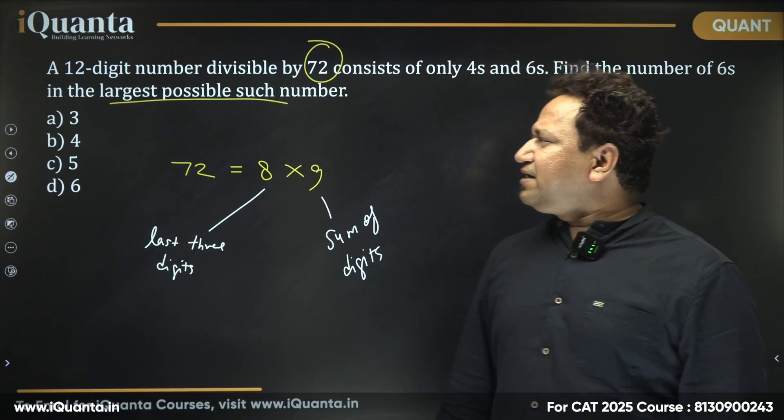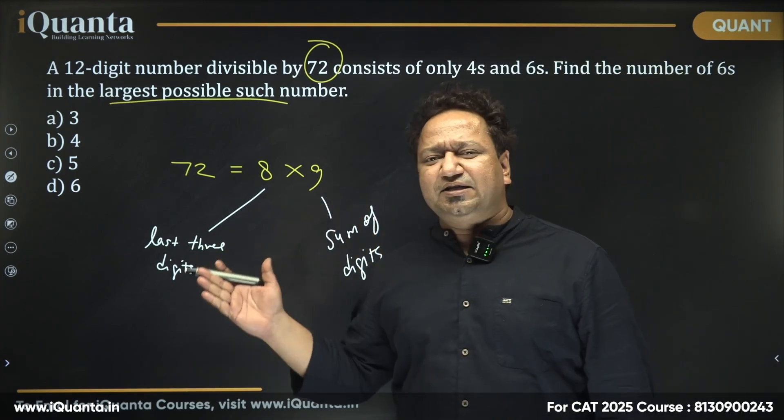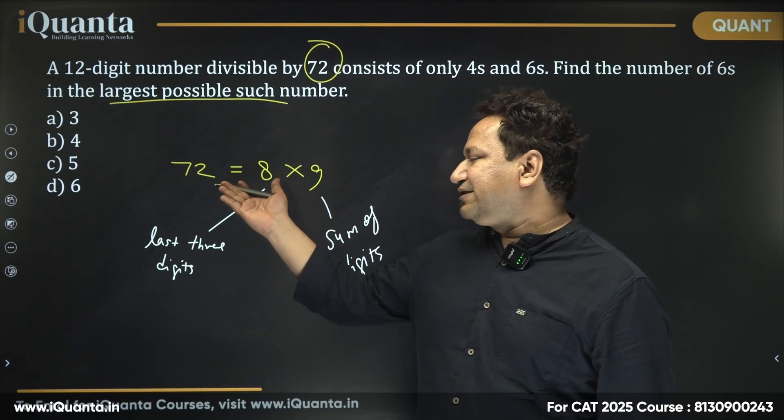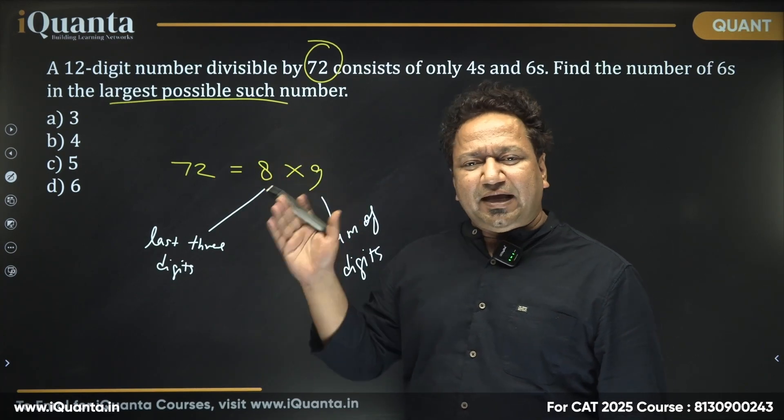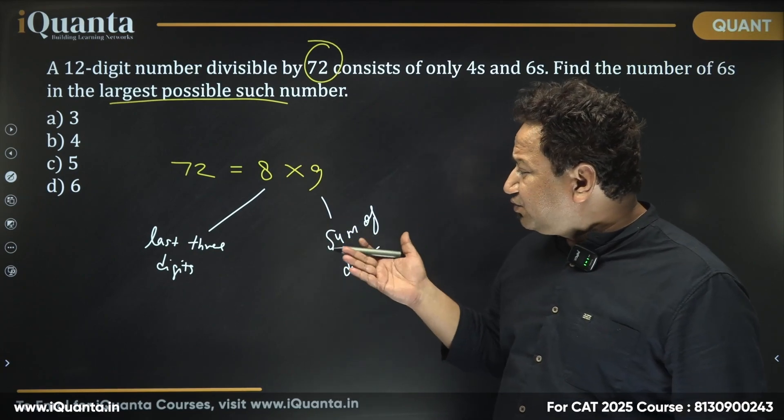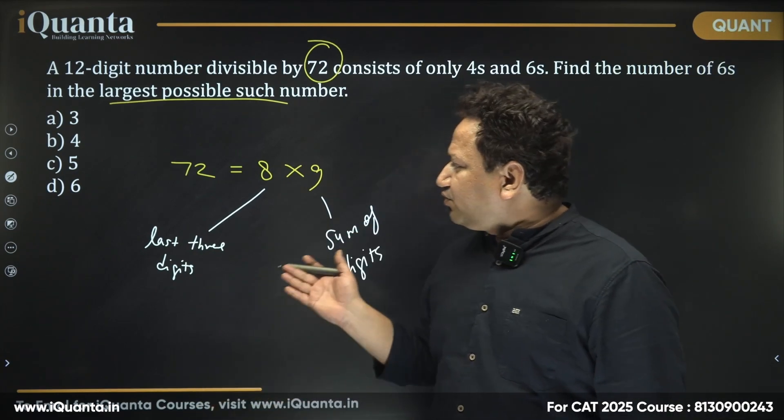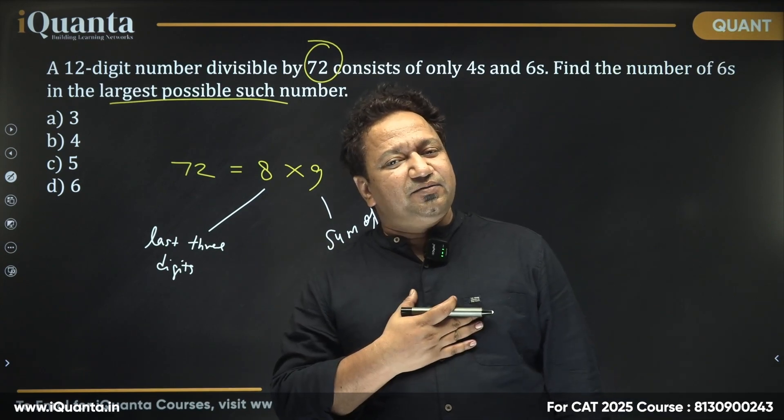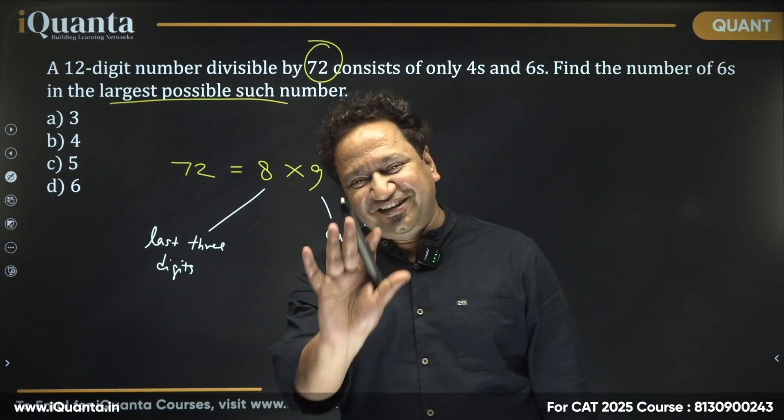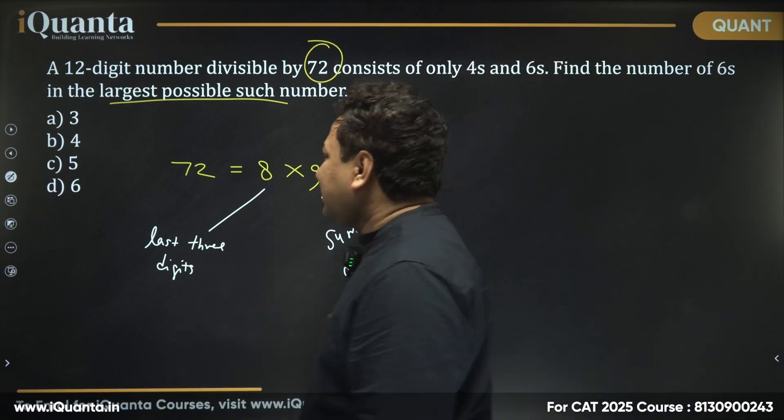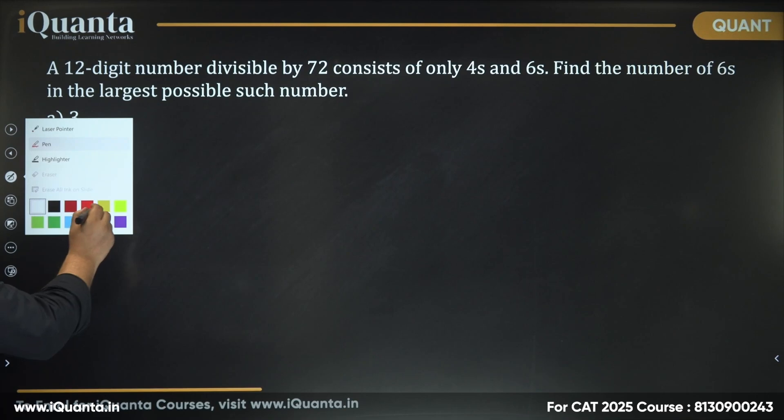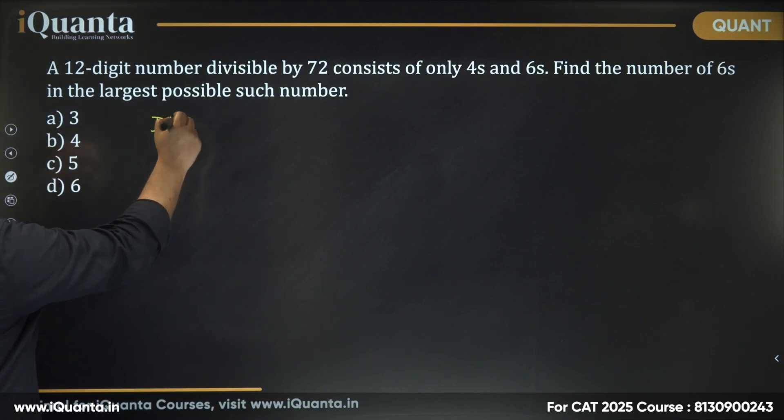Now you might be thinking that 72 can also be done as 2 into 36, 4 into 9, then we have 36 into 2, 12 into 6. So why I chose 8 and 9 only? The reason is because I know the divisibility rule of 8 as well as 9. That's for keeping my life as simple as possible. So let's check one by one. First, I will check the divisibility by 9.